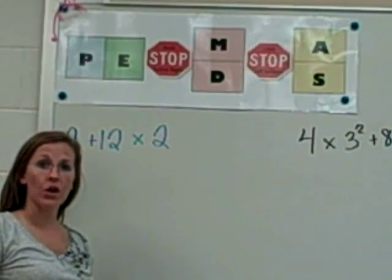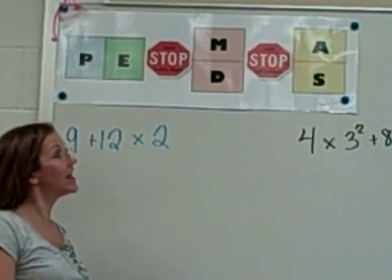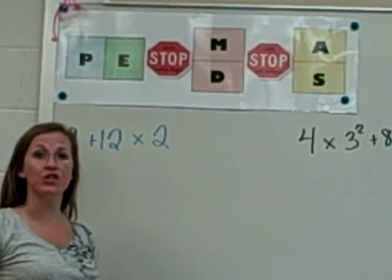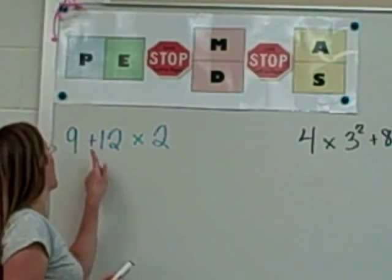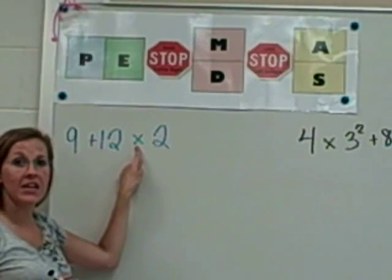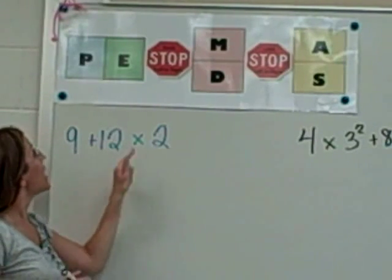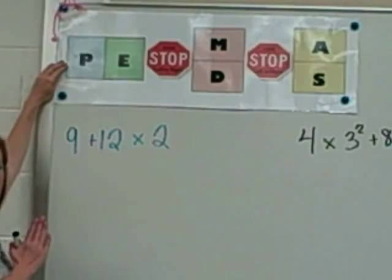On this first problem that I'm going to go over, it's a very basic problem. There's not a lot of different operations to do. So I'm going to look at the problem and determine what's in there first. I've got an addition sign and then there's a multiplication sign. So looking at our chart, there aren't any parentheses, so we can skip that.